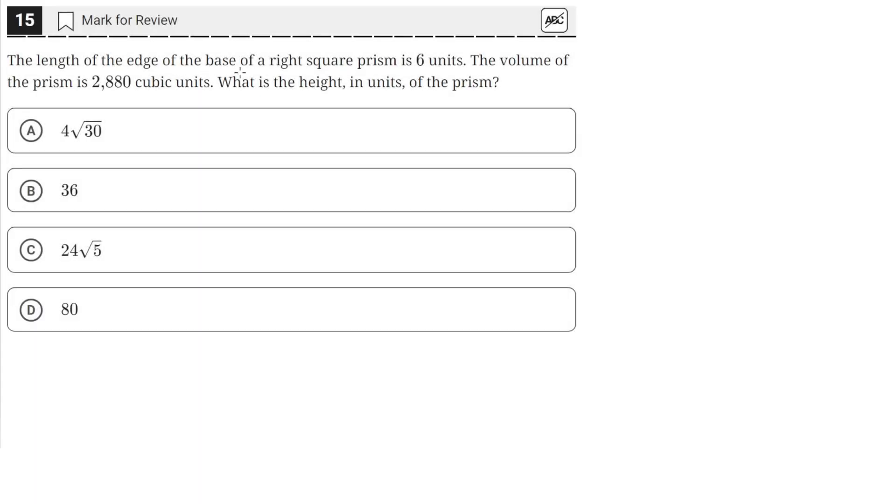The length of the edge of the base of a right square prism is 6 units. The volume of the prism is 2,880 cubic units. What is the height in units of the prism?